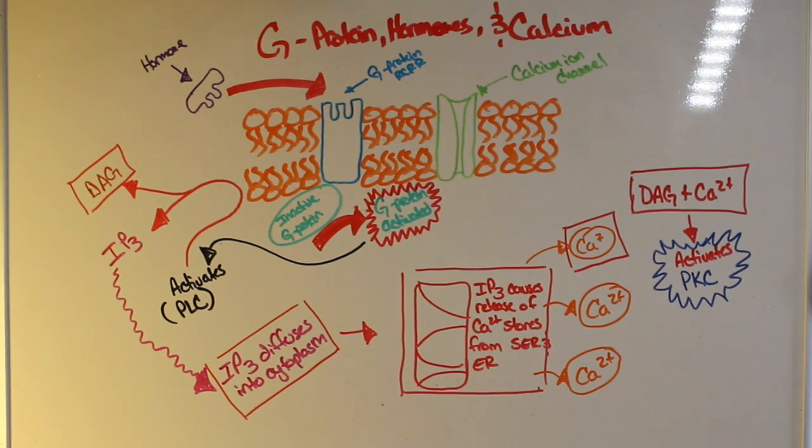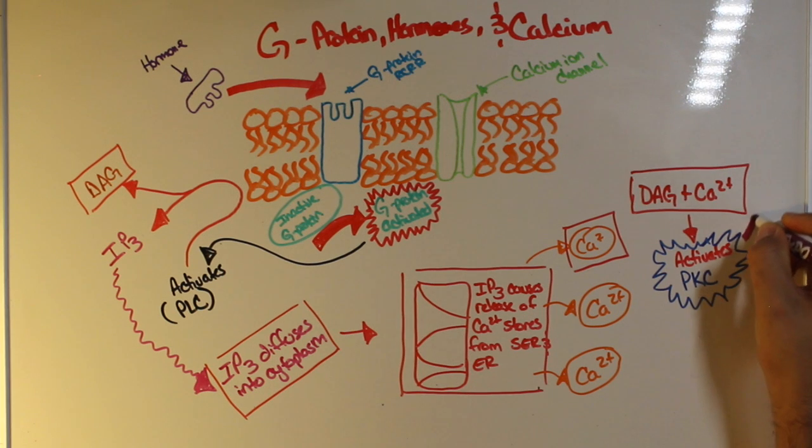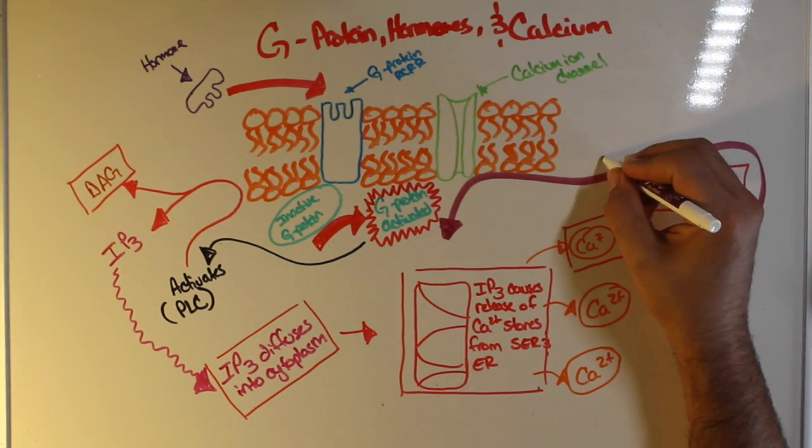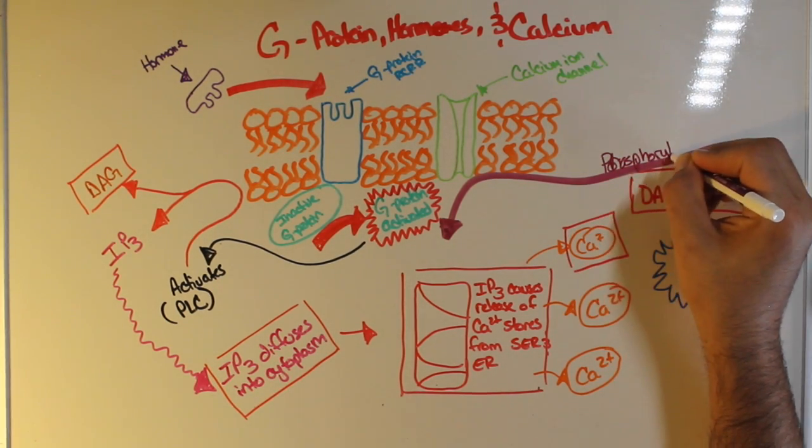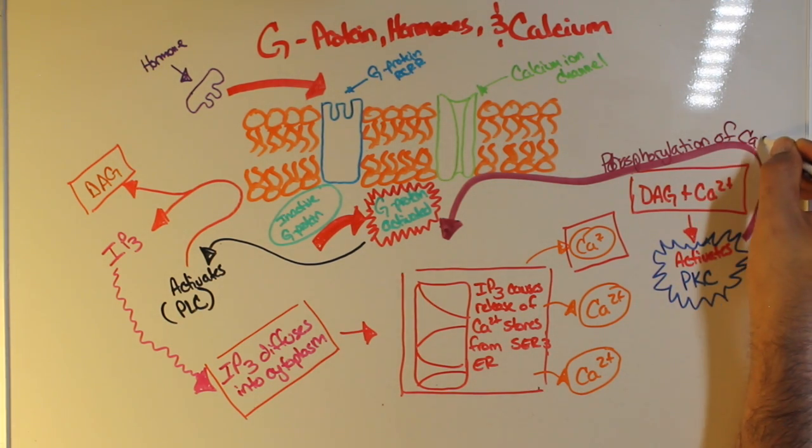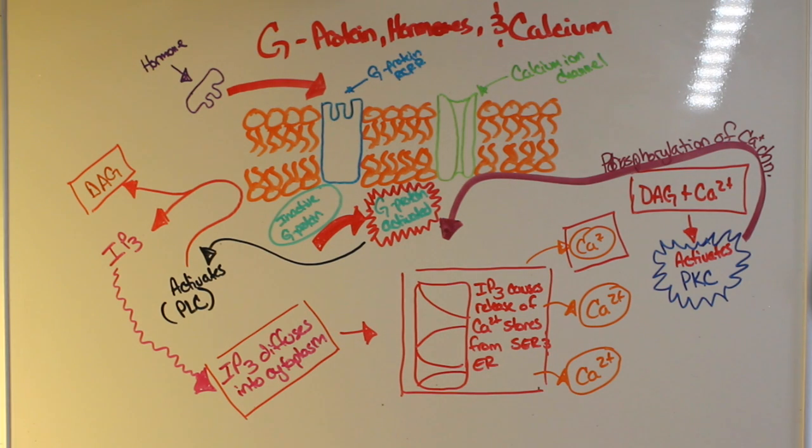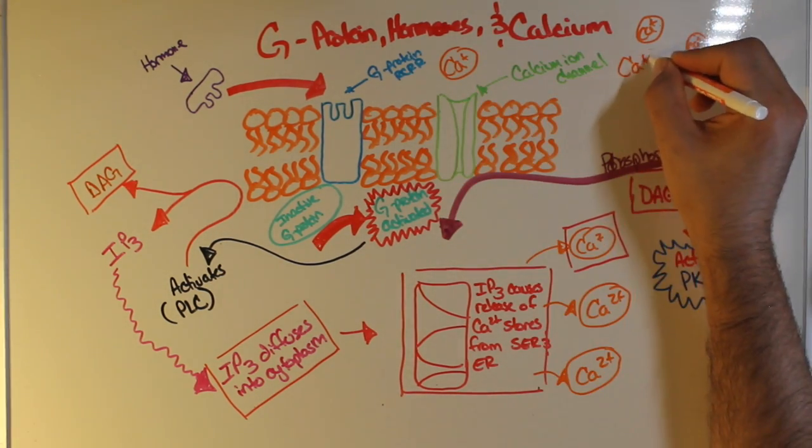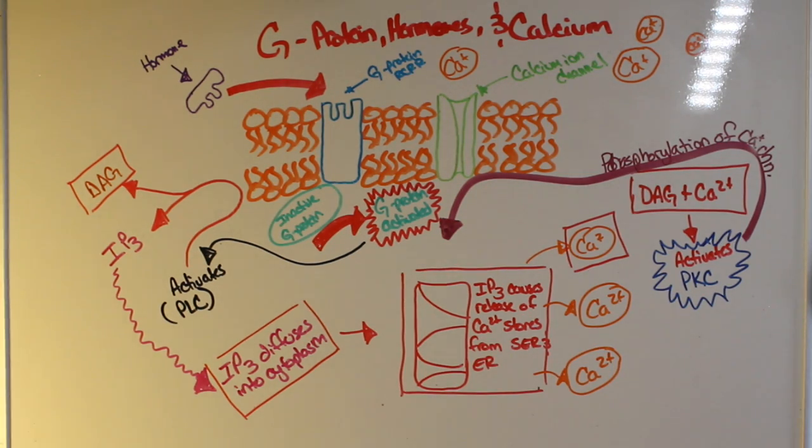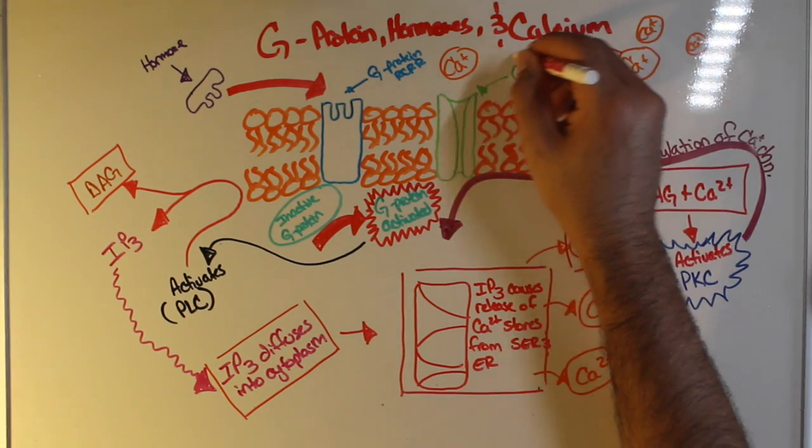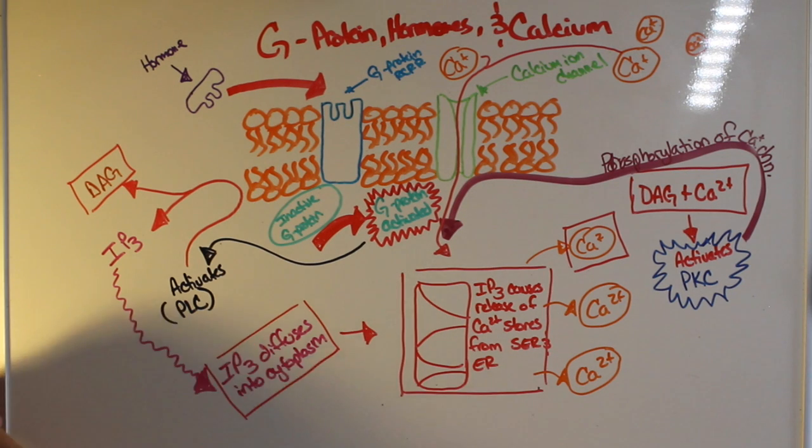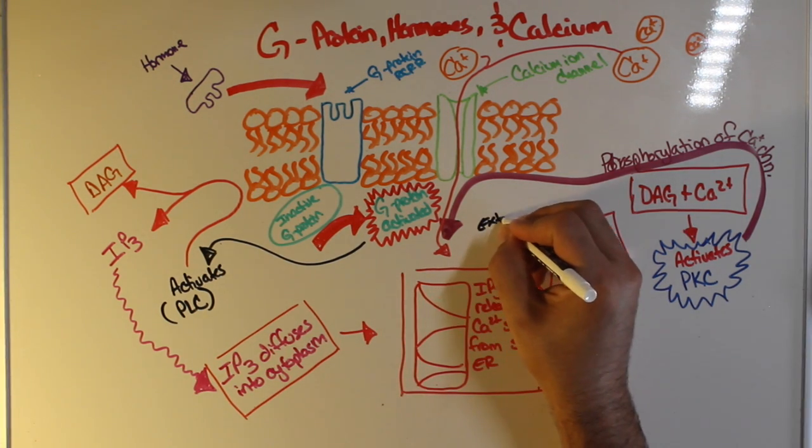Now PKC is also very important because this is what phosphorylates the calcium ion channels. Now remember that phosphorylation is the process of transferring a phosphate group or a high energy molecule to something. Now once that occurs, it will also cause another conformational change on the calcium ion channels and it will cause it to open. This will cause the influx of cytosolic calcium into the cell, once again increasing the calcium levels within the cell.